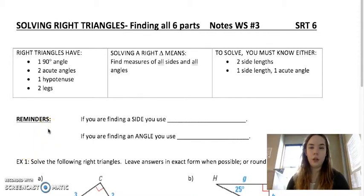Alright, so today we're going to talk about solving right triangles. We've already been practicing the skills you need to do this, so now we're just applying it to find all the sides and all the angles in a triangle instead of just one at a time. So this only works for right triangles, which means it has a right angle, two acute angles, a hypotenuse and two legs.